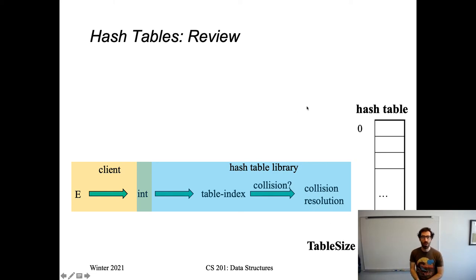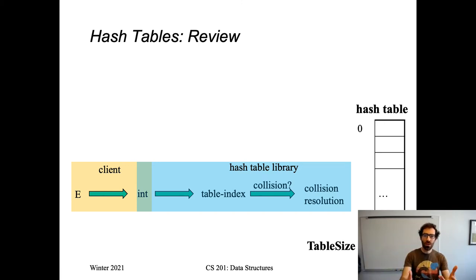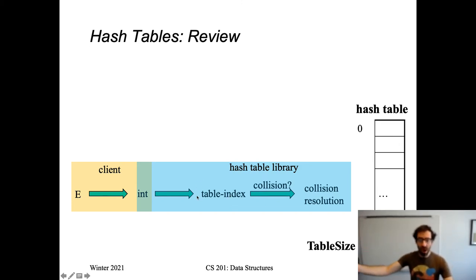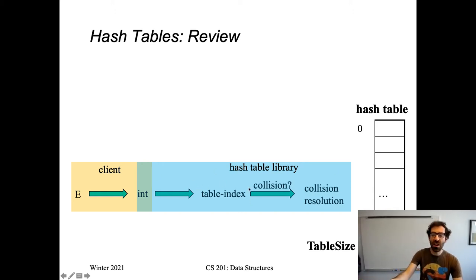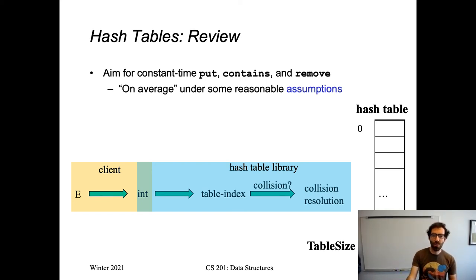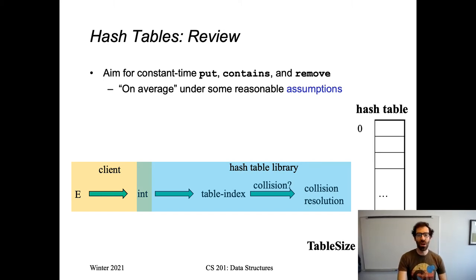Like with our array list, we have this fixed size internal array that's holding our data. But we've introduced this idea of a hash function that is going to turn an object into a table index. Multiple different objects may end up hashing to the same table index, and so that's what we'll be talking about today — how do we resolve that situation? We're aiming for constant time map ADT operations: put, contains, remove, get. This is going to be on average, under some reasonable assumptions that we'll get to today.